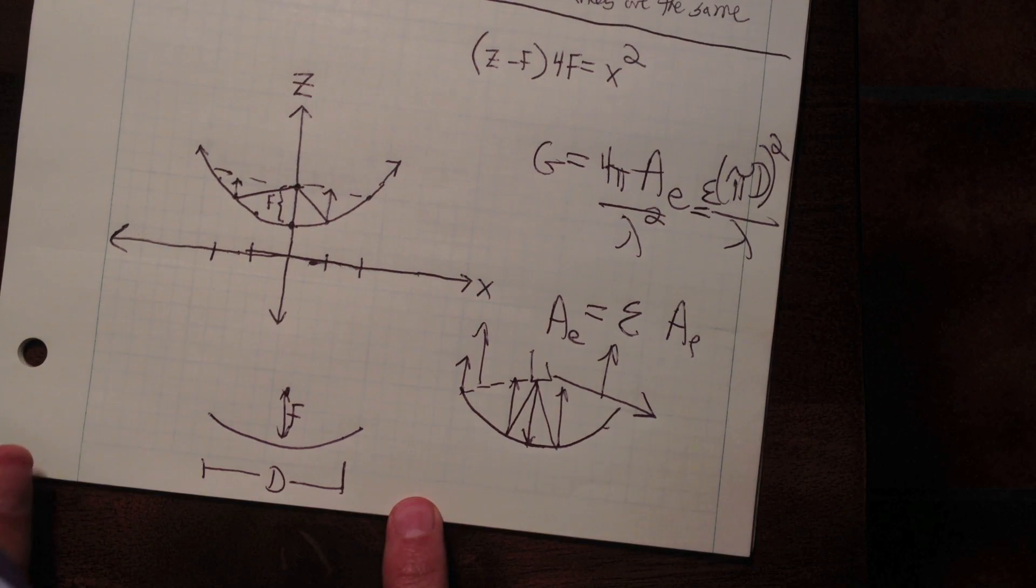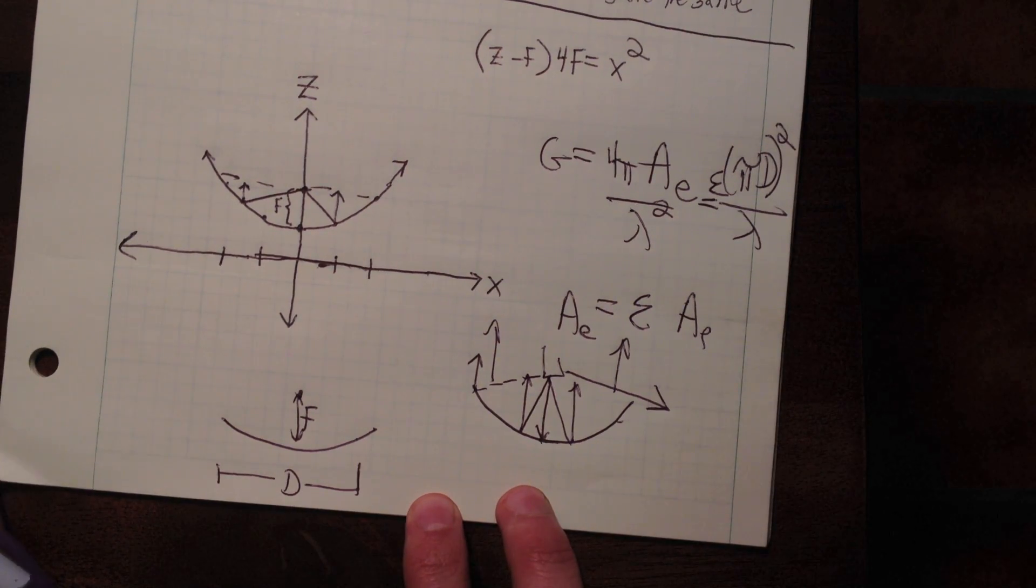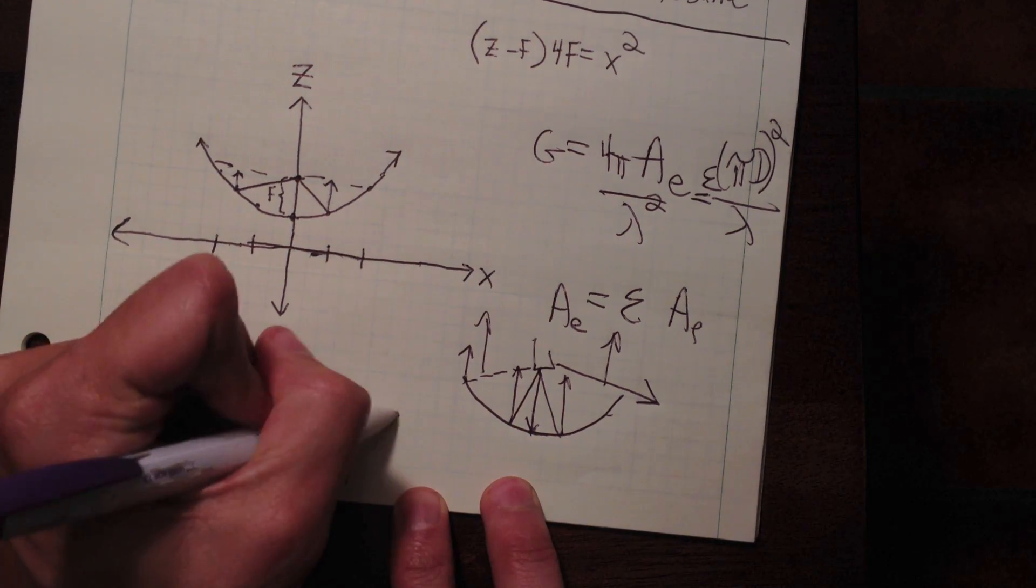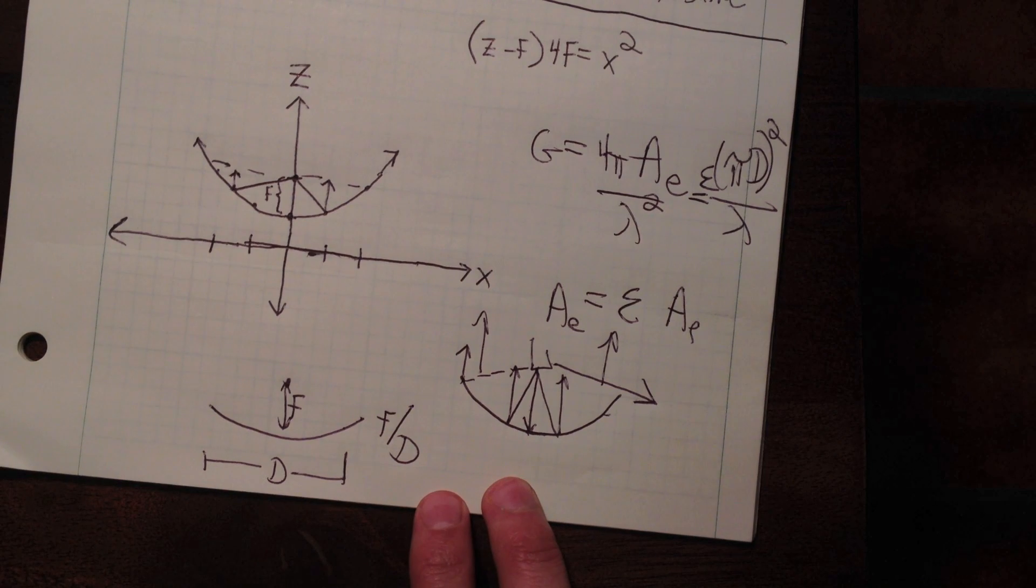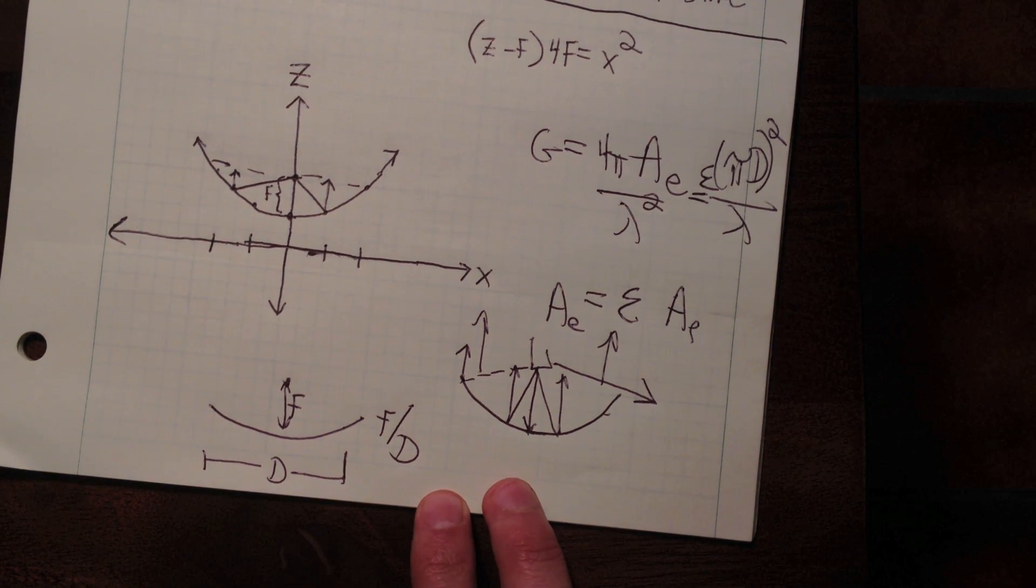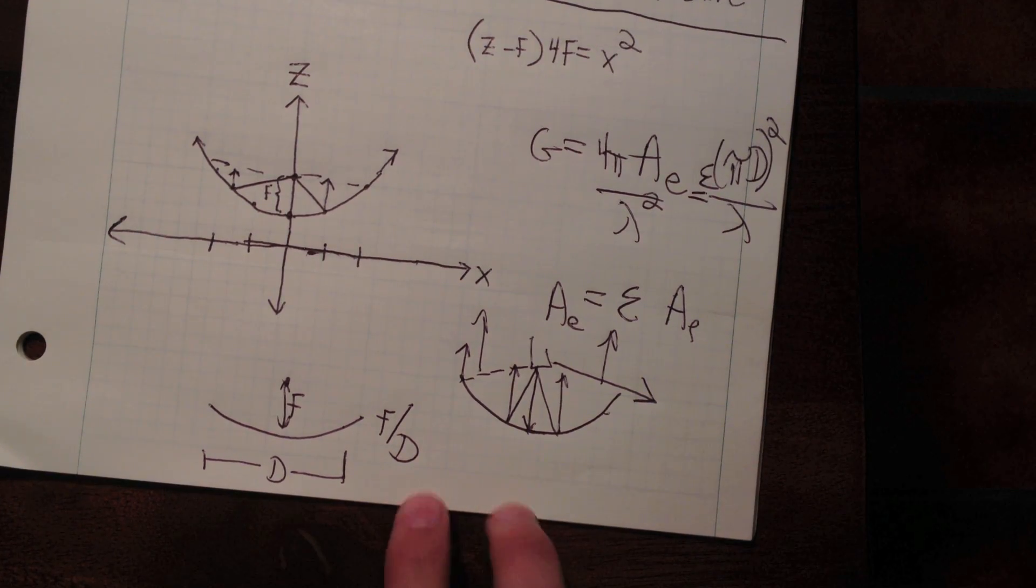For F, empirically, through simulations, you can find that the F over D ratio that is best is often anywhere from 0.35 to 0.7, and typically it's in there. You can optimize it or whatever.